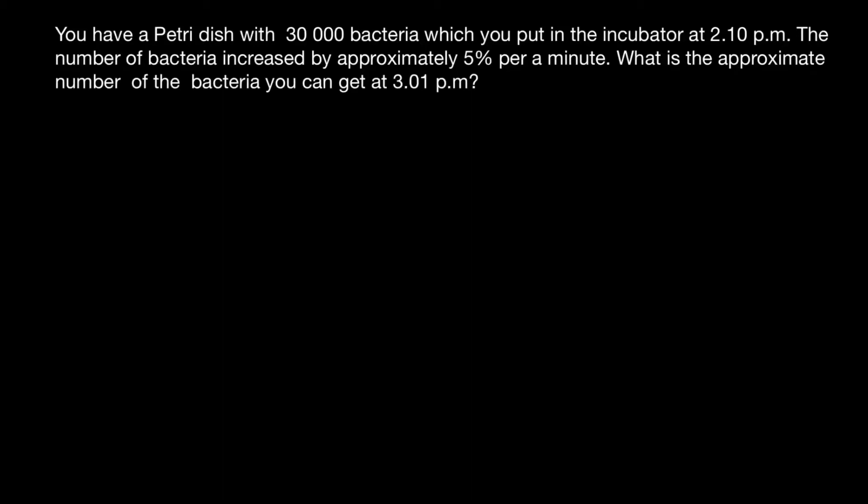Hello, and welcome to Nikolai's genetics lessons. Today's problem is you have a Petri dish with 30,000 bacteria which you put in the incubator at 2:10 PM. The number of bacteria increased by approximately 5% per minute. What is the approximate number of bacteria you can get at 3:01 PM?